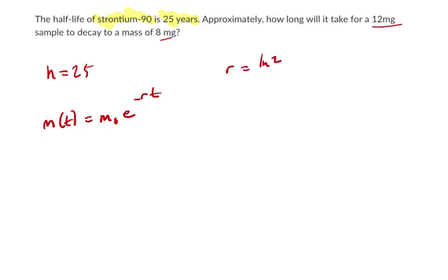We have a starting mass of 12 milligrams, that's m₀ times e to the negative ln of 2 over 25 times some amount of time, and that would get us to 8.